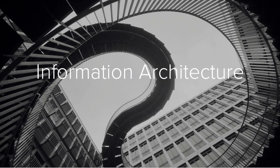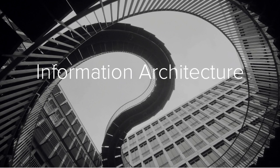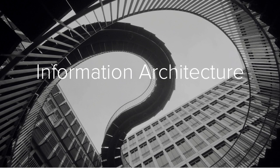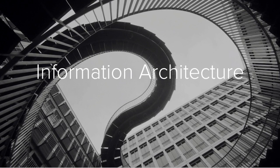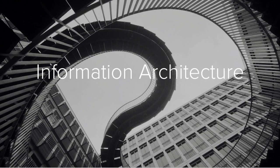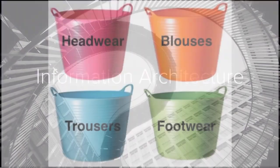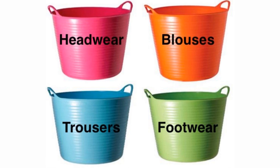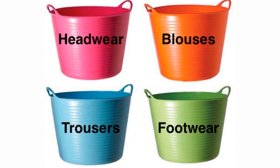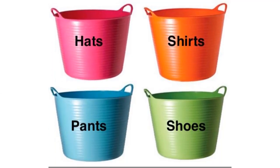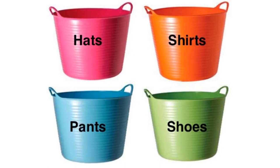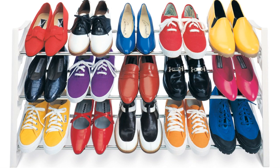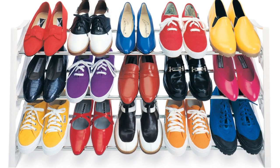The way pieces of information are organized, named, and connected to each other on a website, in a library catalog or database, or in an app, is called information architecture. Information architects decide what categories the various pieces of information fit into, and what those categories should be called, in order to make it easier for the searcher to find particular pieces of information.